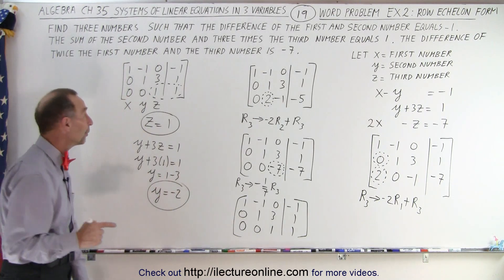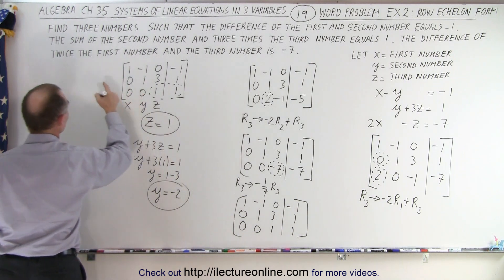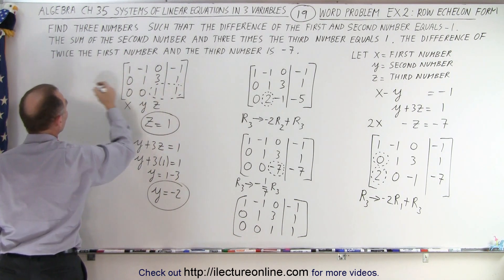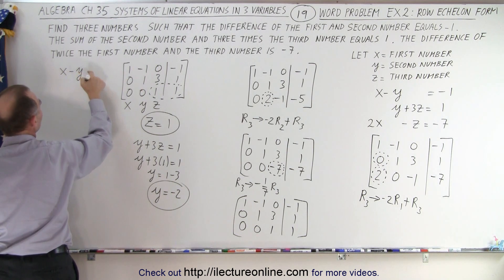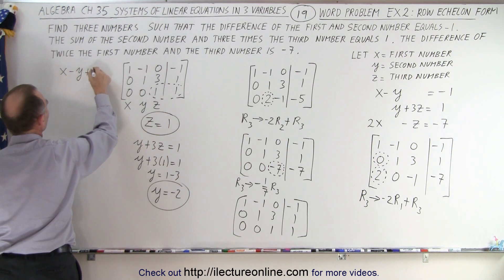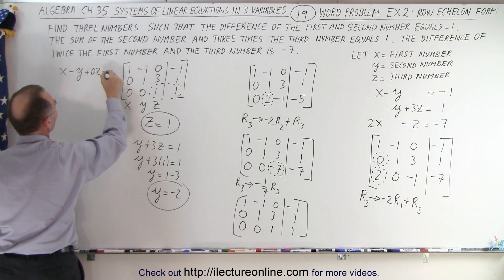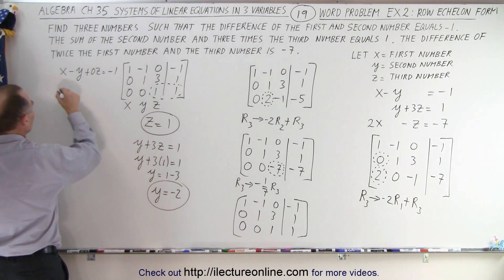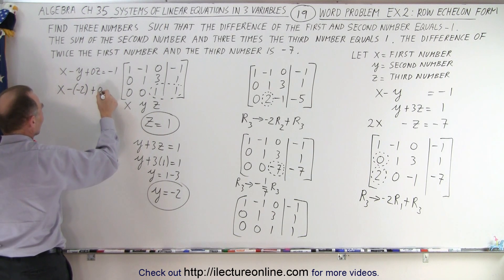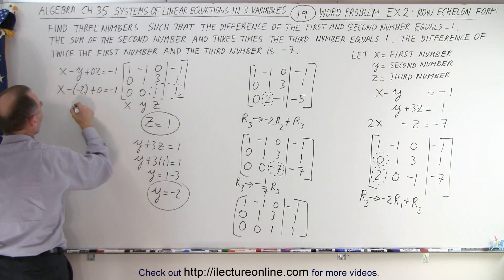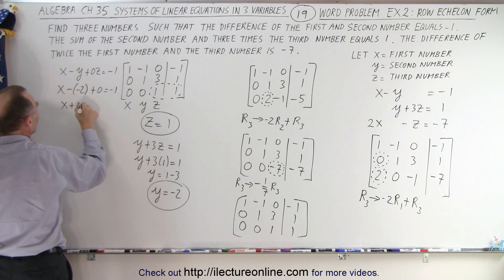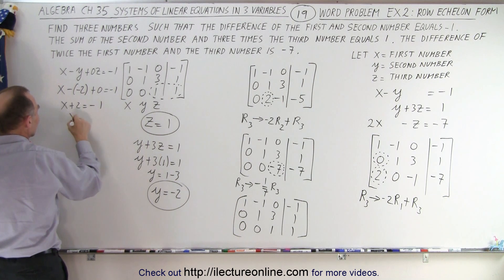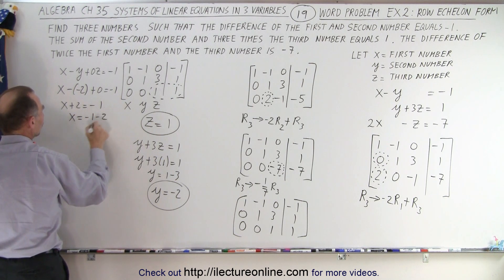Now for the first row: x − y + 0·z = −1. Substituting y = −2: x − (−2) = −1, so x + 2 = −1. Bringing the two across gives x = −1 − 2, so x equals negative three. That's our third variable.